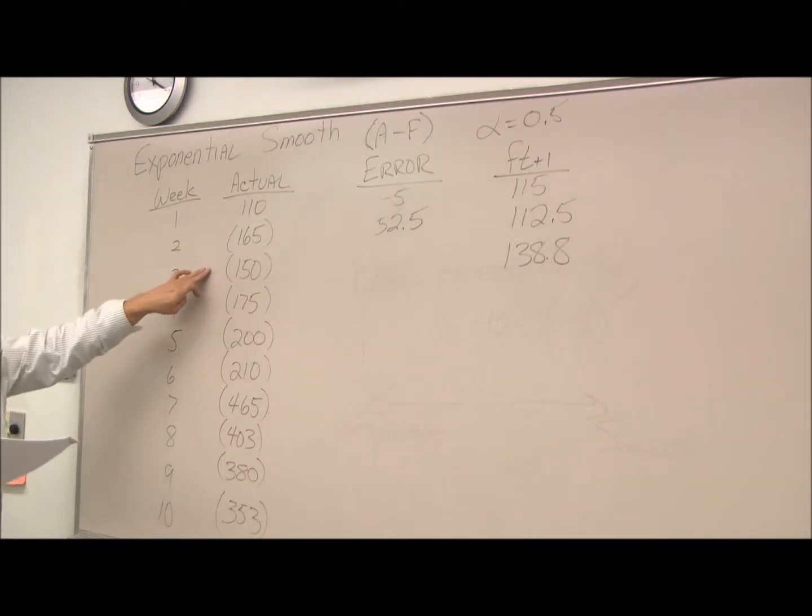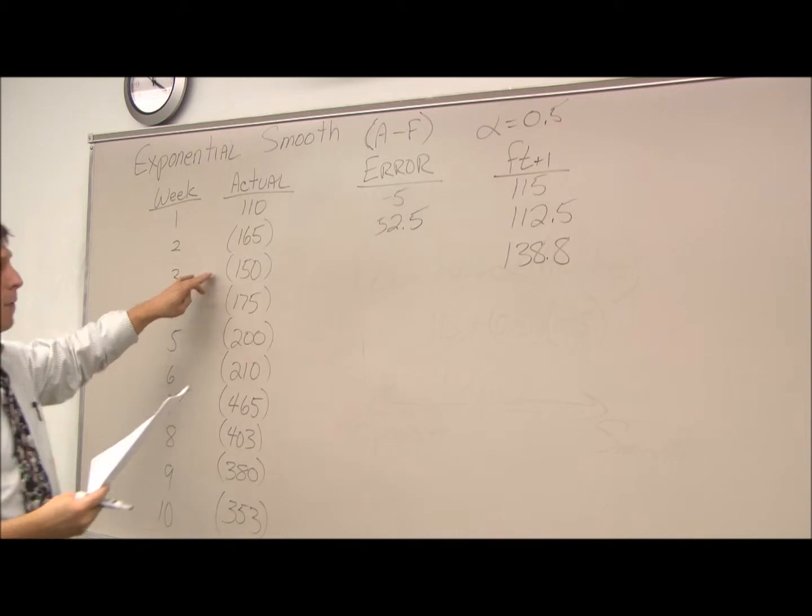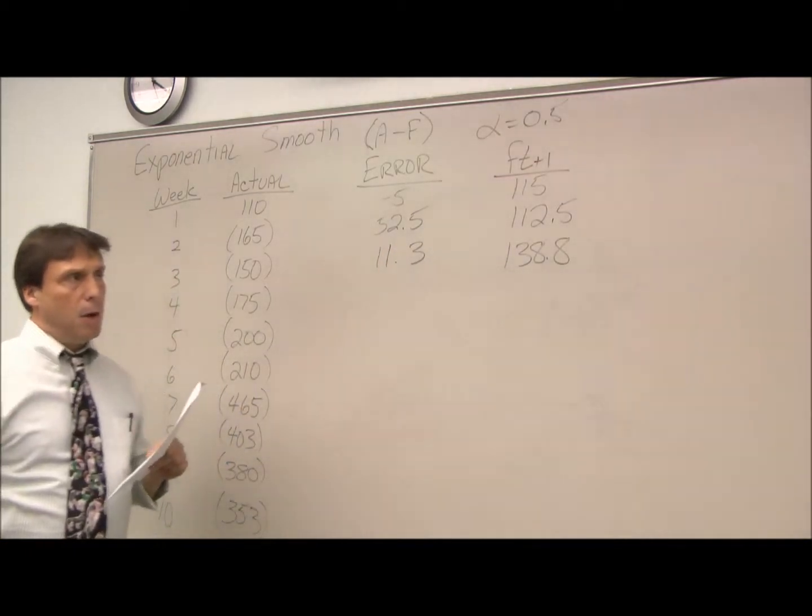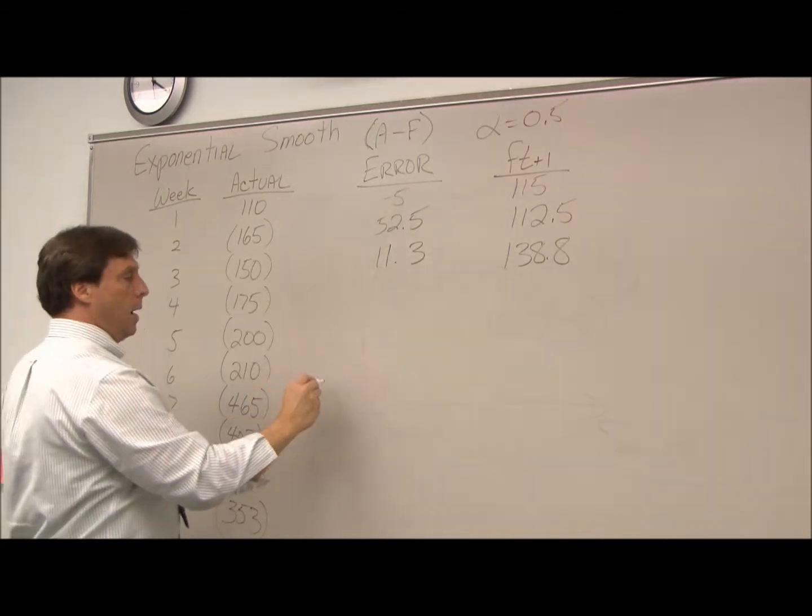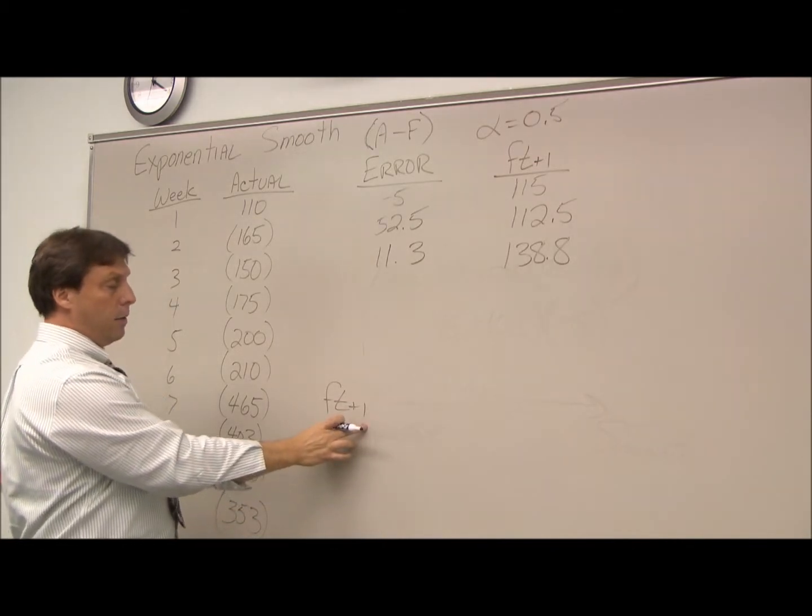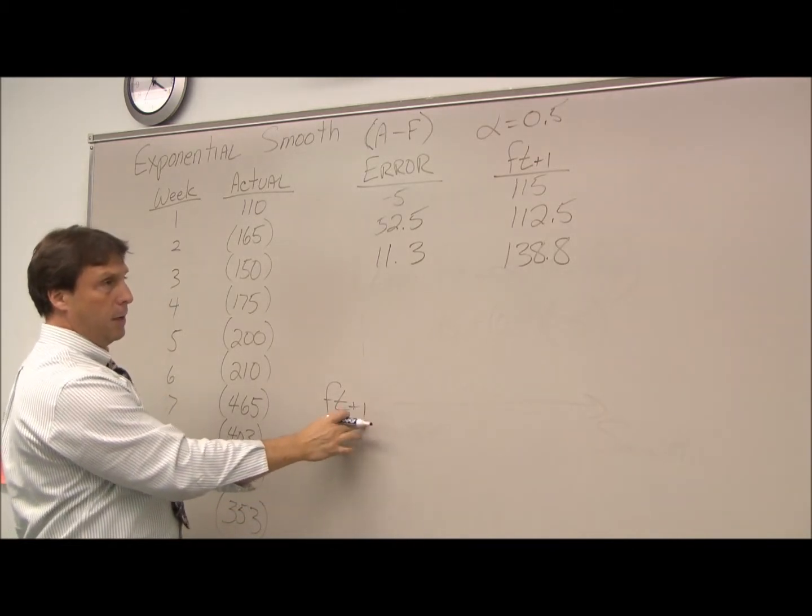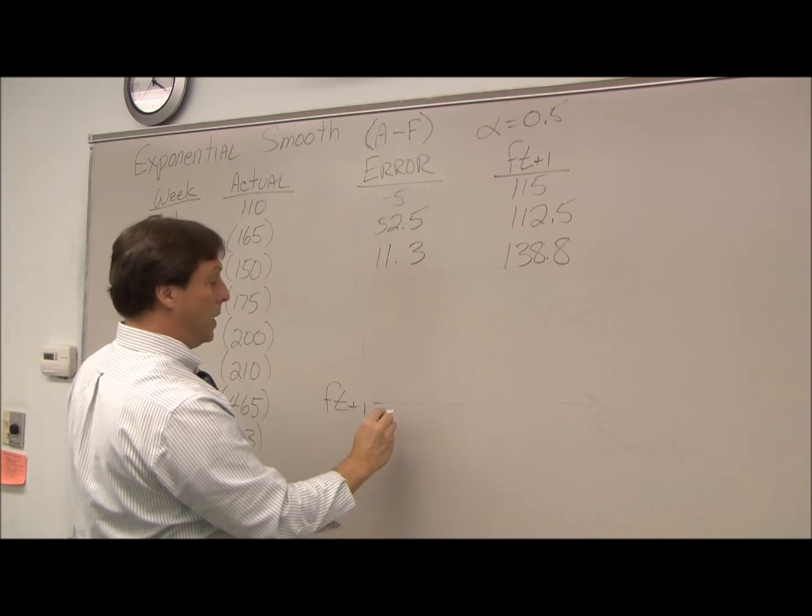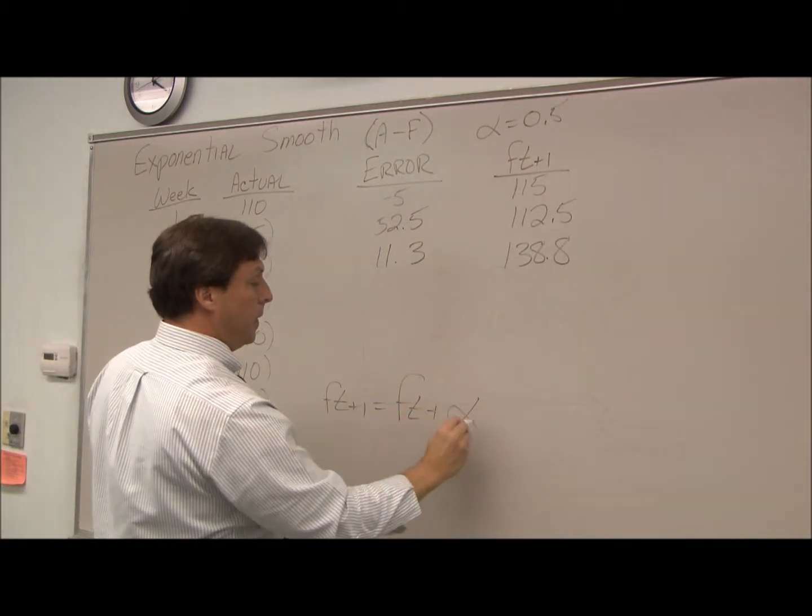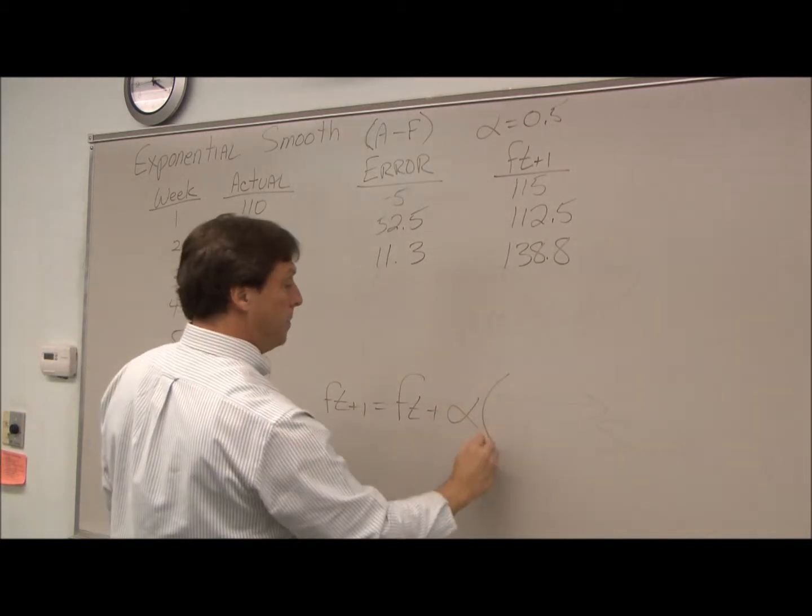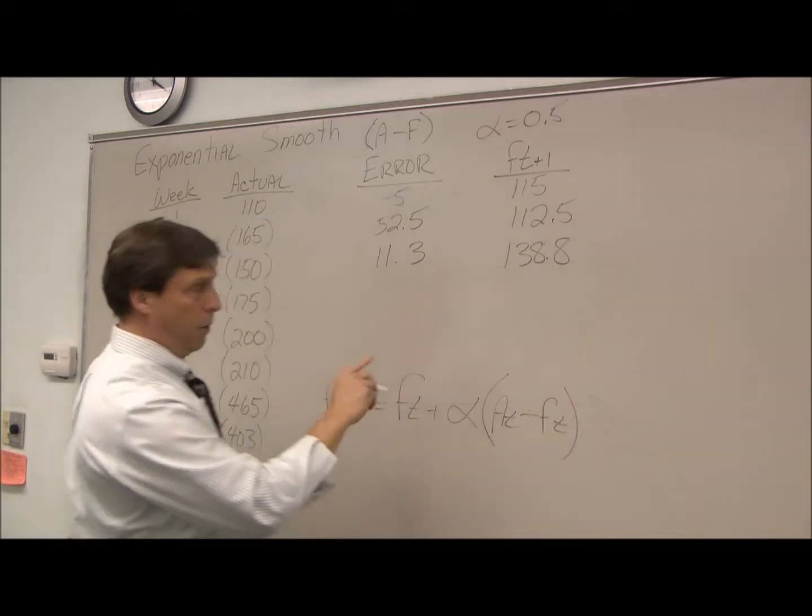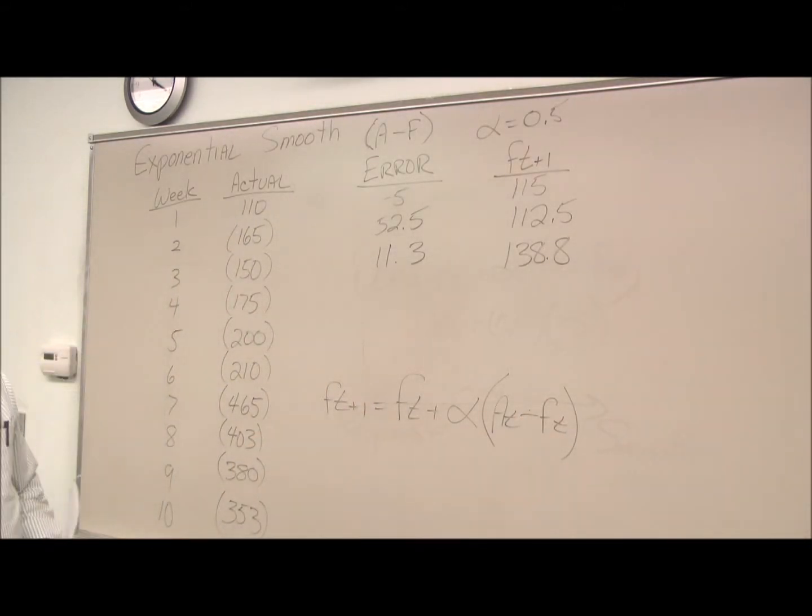Now that I have the forecast, I see how much it differs from my actual, and I just keep going. I just keep plugging it into the formula. Ft plus one, in other words our forecast for the next month, just equals the forecast for the current month plus my alpha times my error. And we can keep going down finishing the series.